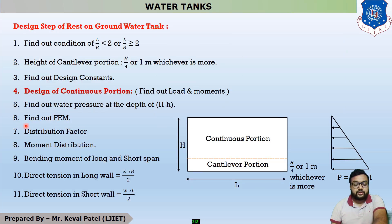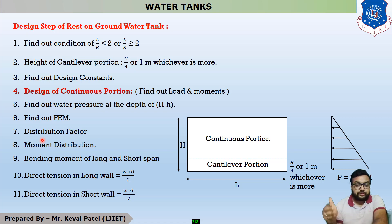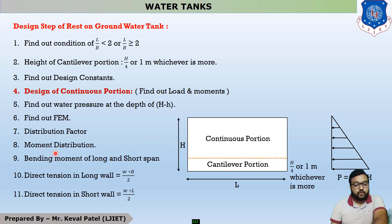This is the use of fixed end moments. After that, we find the distribution factors and use the moment distribution method to design the rectangular water tank, whether raised-on-ground or underground. With the moment distribution, we find the final bending moments for the long span and short span.